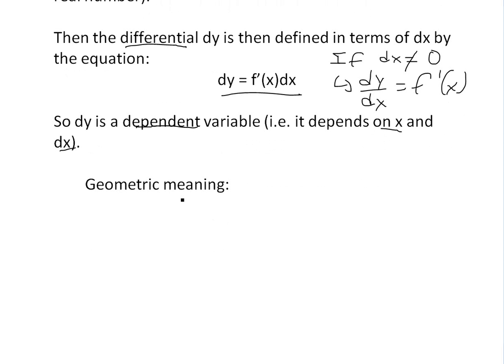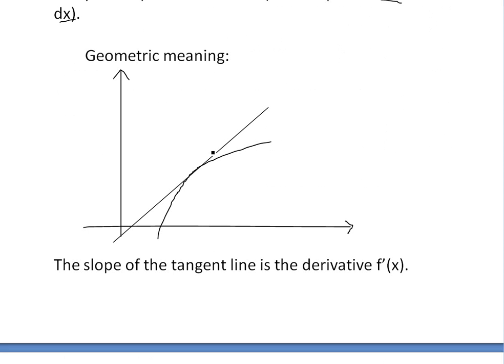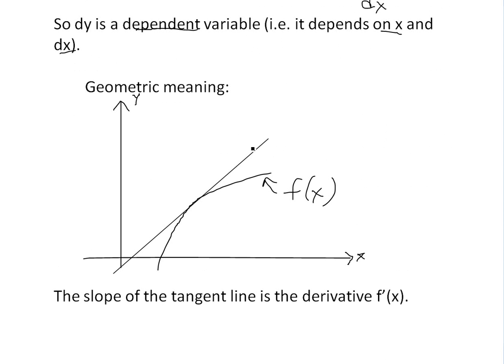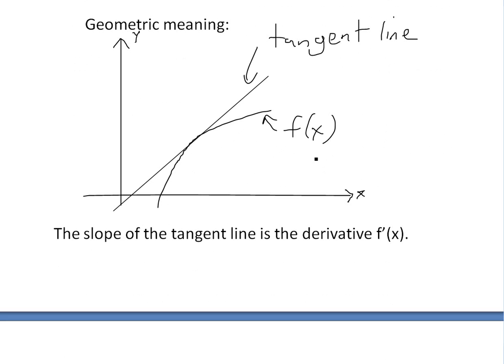So anyways, the geometric meaning of this, yeah, so let's say first we're given, I'll just draw this x, y coordinates here. Let's say we're given this graph right here. This is f of x. And let's say this is just a tangent line. Yeah, so this is just a tangent line to f of x at this point right here.